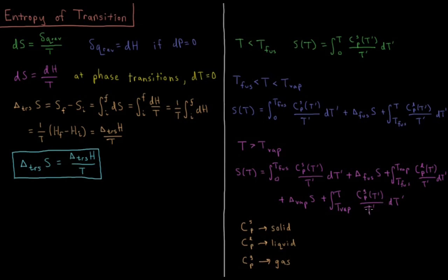Using this and our ideas from the previous video, we're now in a position to start computing the absolute entropy of a system for any given temperature and pressure, should we know various facts about the system — like what amount of heat it takes to make phase transitions occur and what the heat capacities of the various phases of that substance are along the way.